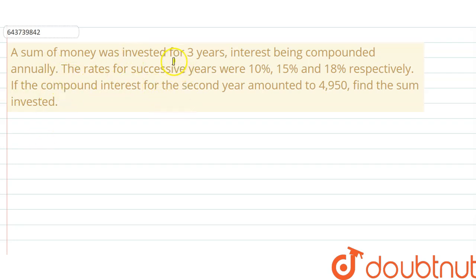Hello. A sum of money was invested for three years, interest being compounded annually. The rates for successive years were 10%, 15% and 18% respectively. If the compound interest for the second year amounted to 4,950, find the sum invested.